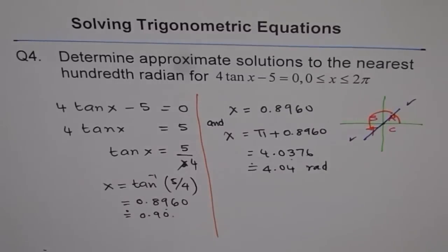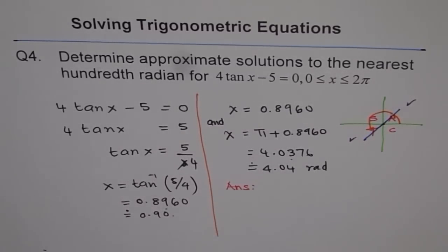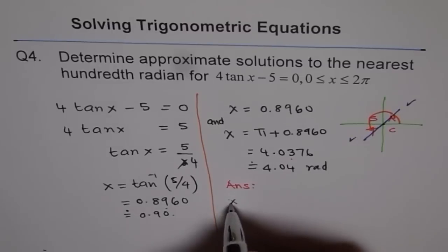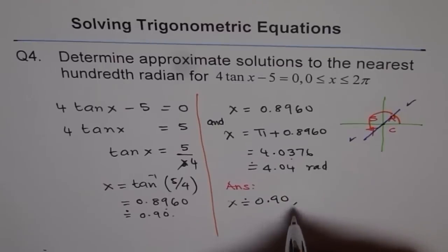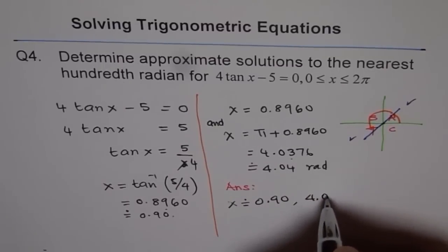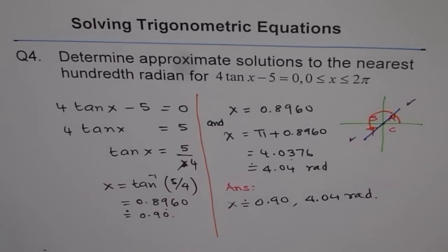Now we can write down both the solutions. Our solution is x equals approximately 0.90 and 4.04 radians. That is how we are going to write the solution for this particular trigonometric equation. Thank you.